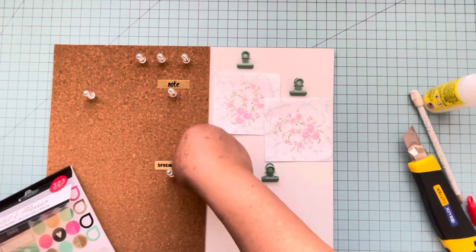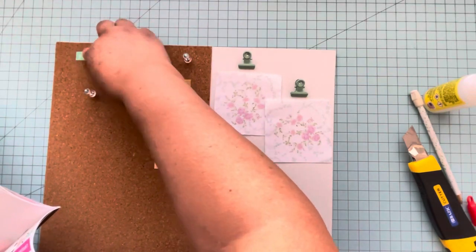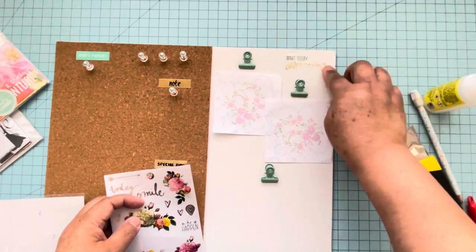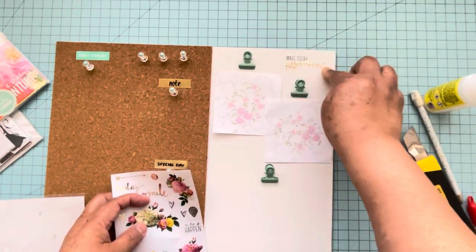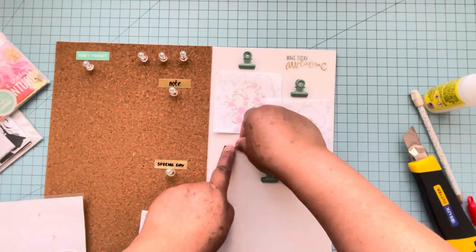Then I found more stickers to embellish the white part of the canvas. I don't want empty spaces, and I just wanted to decorate with some of the stickers there.